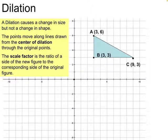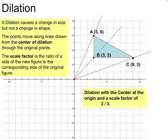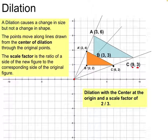We can also make a dilation that's a reduction in size by using a scale factor smaller than 1. With a scale factor of two-thirds, we draw the same vanishing lines from the center of dilation and find two-thirds of each x and y value to get the new points. The new triangle is two-thirds as big on each side as it was before — two-thirds of 9 is 6, and two-thirds of 3 is 2. That dilation is a reduction in size because the scale factor is smaller than 1. And that is your introduction to transformations.